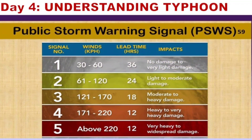I also included the Philippine Storm Warning Signals (PSWS) from Signal 1 to Signal 5. Signal Number 1 has wind speeds of 30 to 60 km/h with a lead time of about 36 hours and results in no damage to very light damage. As the signal number increases, the impact also increases — higher signal numbers indicate greater potential destruction on both land and water.